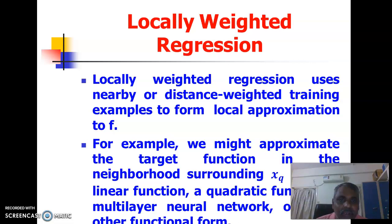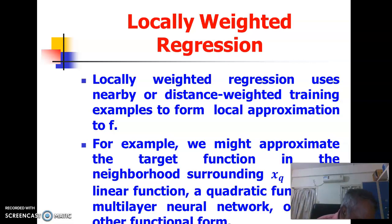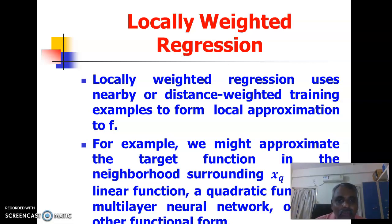When we say locally, we are going to consider only some training examples near the query point. The second one, weighted, means we are going to use some multiplication factor which is related to the distance between the query point and the nearby points. The third one is regression — fitting an approximation function is called regression.